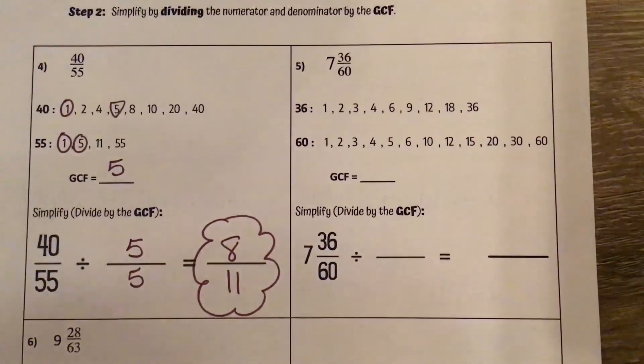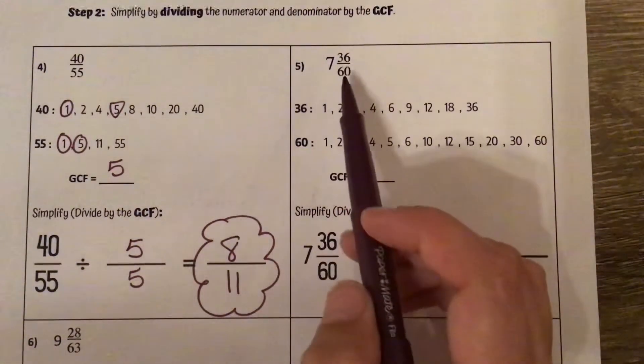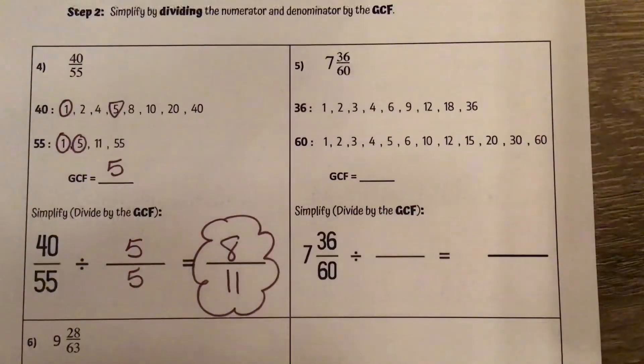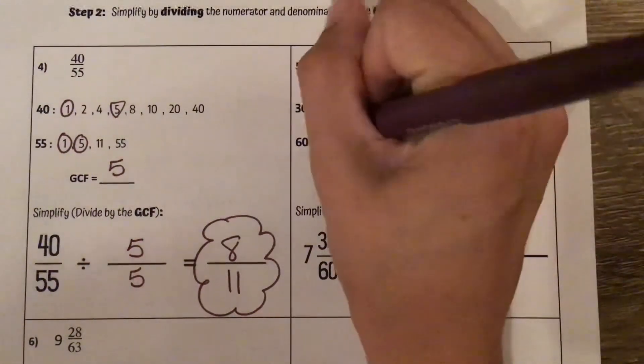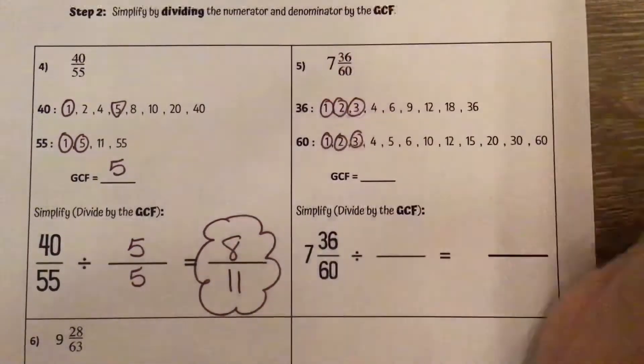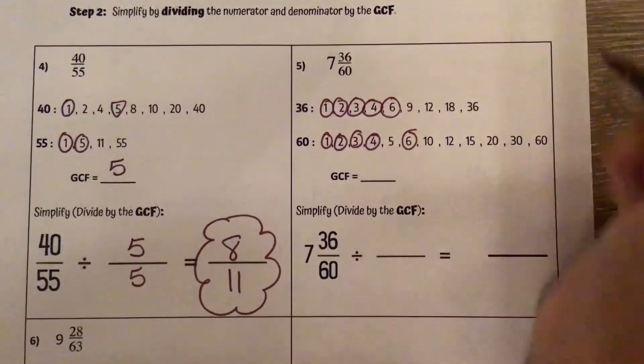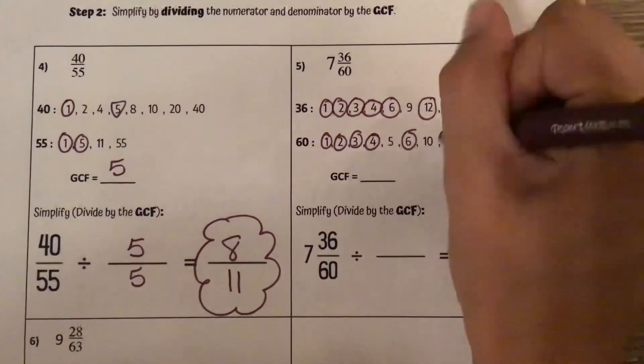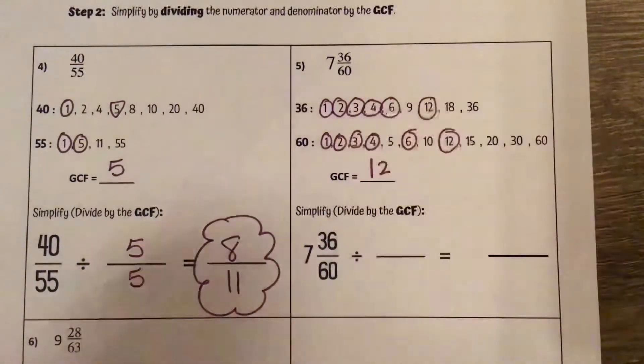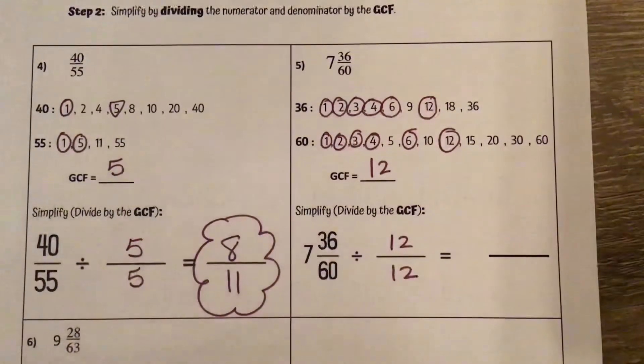All right, number 5, we've got 7 and 36 sixtieths. We only need to look at the fraction part right now. So I've listed out the factors of 36 and 60. I'm going to circle the ones they share: 1, 2, 3, 4, 6, not 9, 12, not 18, not 36. So their greatest common factor is 12. So that means I'm going to divide the fraction by 12.